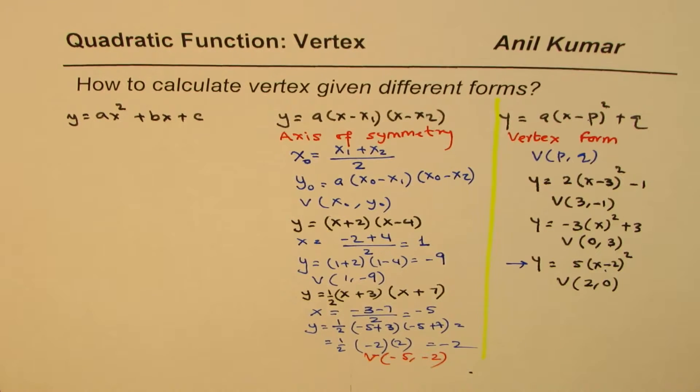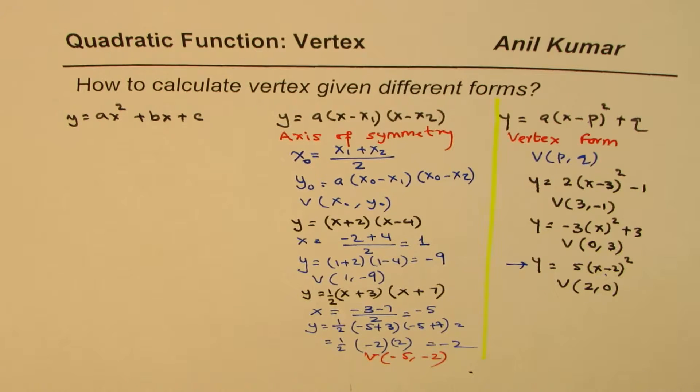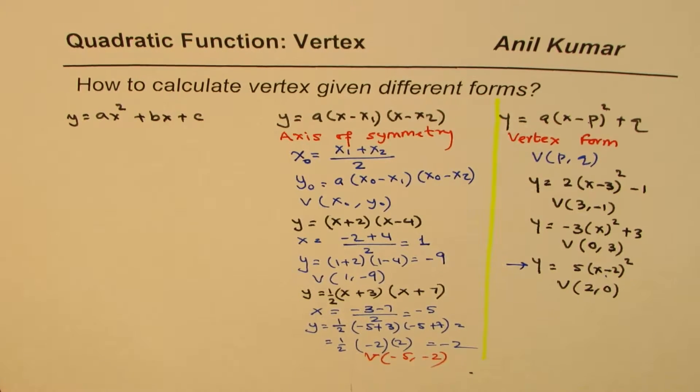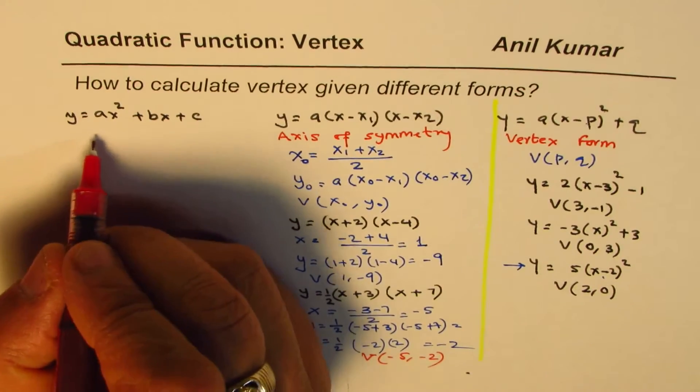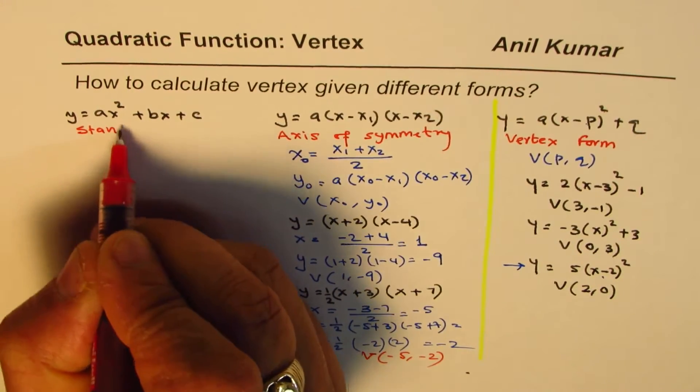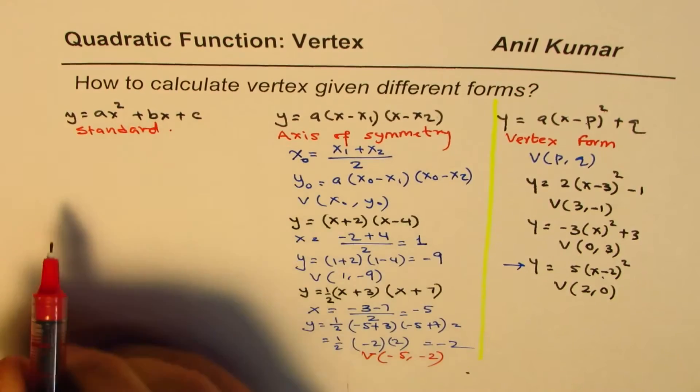So that's how you do it to get the vertex from the factored form. Now let's look into the standard form. So this is standard form. How do you find vertex here?